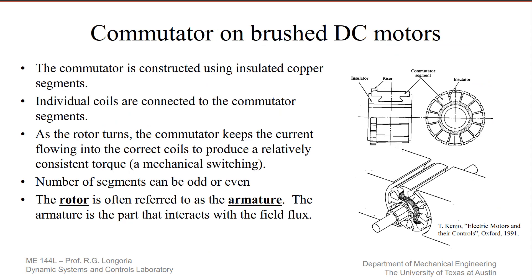Just a few more points related to the commutator — usually constructed of copper segments with insulators between them. The brushes are contacting each of these to complete the circuit. This drawing from Kenjo's book shows how the commutator switches onto one of these coils in order to generate the torque. So as the rotor is turning, the commutator keeps switching between different connections so that you can continuously have the torque applied onto the rotor.